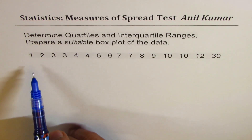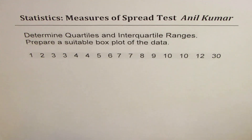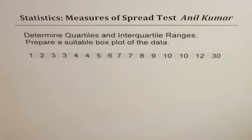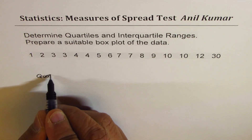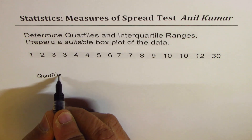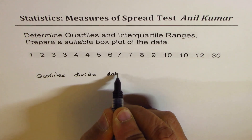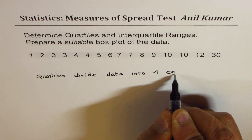I've taken very simple data here. The numbers are 1, 2, 3, 3, 4, 4, 5, 6, 7, 7, 8, 9, 10, 10, 12, and 30. Now from here we'll understand the concept about quartiles. The first thing you need to know is that when we talk about quartiles, remember — quartiles divide data into four equal parts.